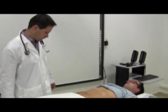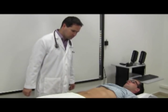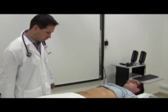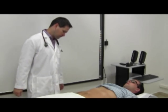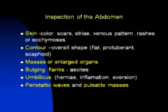Inspection. First, we start with inspection. It is helpful to look at the patient from different angles so that you can view the abdomen tangentially. During the inspection, pay attention to skin color, presence of scars, striae, venous pattern, rashes, or ecchymosis.